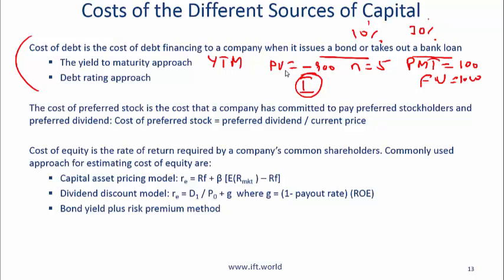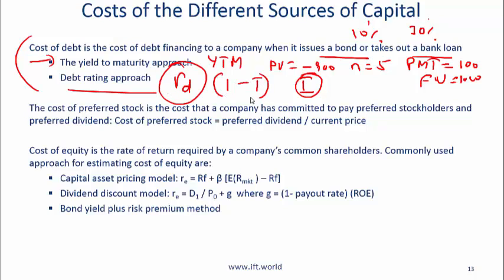The debt rating approach says you identify the debt rating of your company, look at other companies with the same debt rating, and look at the YTM on the bonds they have issued — that gives you the cost of debt. The after-tax cost of debt means you simply multiply by (1 minus your marginal tax rate).